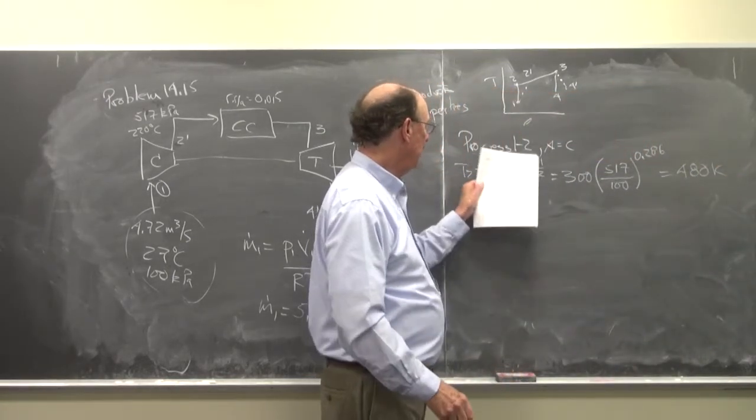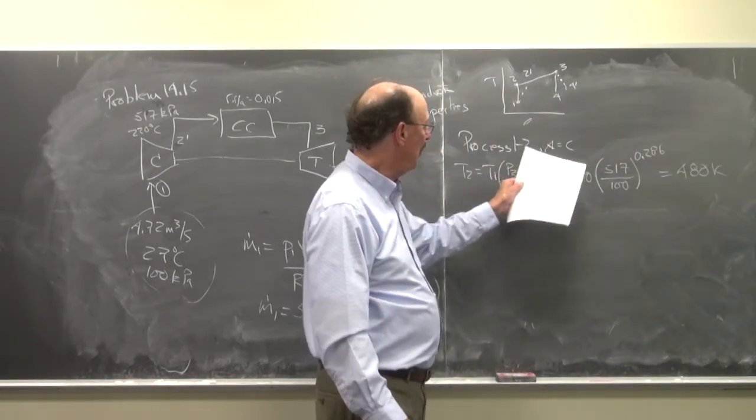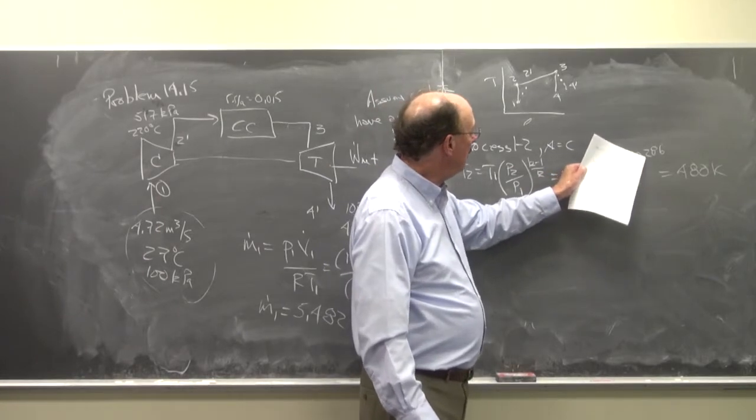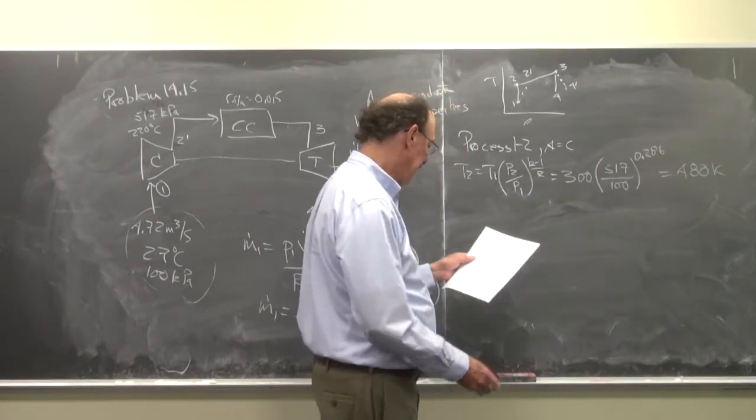So if I put in K is 1.4, it's 0.2859, so I rounded it to that.